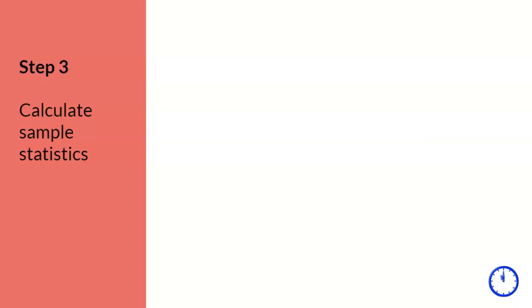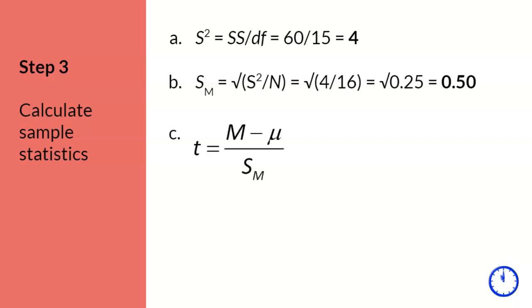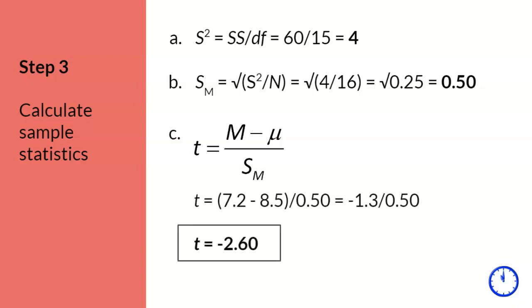Step 3. Since we do not know population variance, sigma squared, we need to estimate both variance and standard error. First, we calculate estimated population variance, s squared, with the new formula. Second, we calculate estimated standard error, sm, with the new formula. Third, we use the modified t-score formula to compare our sample mean and estimated standard error. Using these values, the t-score for the sample is t equals negative 2.60. The box indicates the final answer I am looking for.